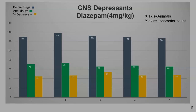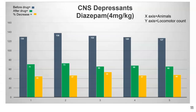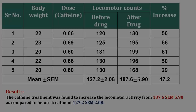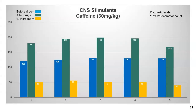This is the graphical record. After administration of the drug, on the x-axis we take the animals and their counts; on the y-axis we check the locomotor activity. The same approach applies for the second drug, caffeine, which is a CNS stimulant. We calculate the caffeine dose according to body weight and use the same formula to calculate the percent increase in locomotor activity.